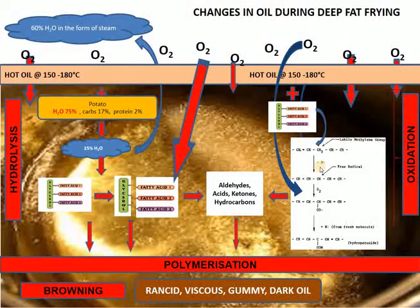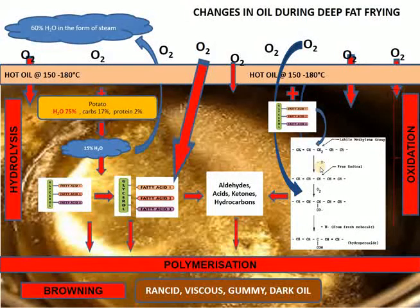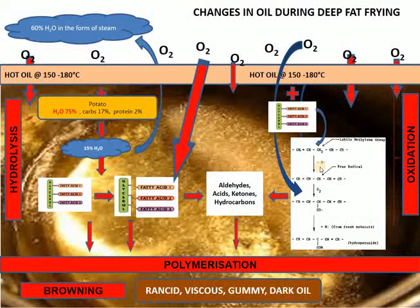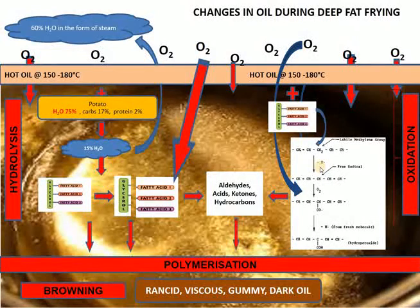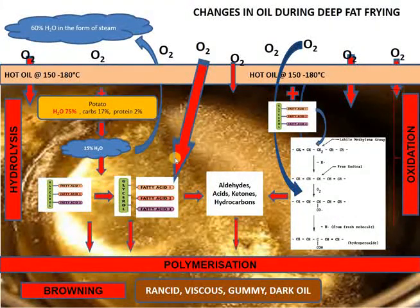When the product is inserted into the hot oil, 60% of the water in the product flashes and is released as steam as the oil starts bubbling. The bubbling of the oil causes aeration, so oxygen is incorporated even faster because the bubbling creates currents that drive oxygen into the oil. The remaining 15% of the water stays inside the oil itself.